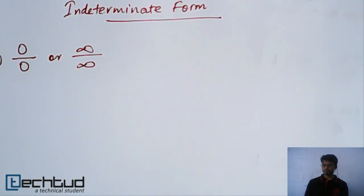Hello everyone, welcome back. In this lecture we will understand different indeterminate forms and the first one is 0 by 0 or infinity by infinity.